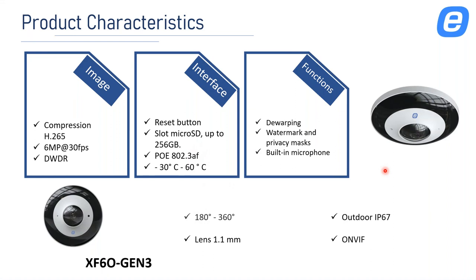The fisheye camera characteristics: H.265 compression, 6 megapixels at 30 frames, digital WDR, reset button, and micro SD slot up to 256 gigabytes. PoE standard 802.3af. Functions include dewarping, watermark, privacy mask, and a built-in microphone, along with basic AI functionalities like motion detection, line crossing, region intrusion, and region entrance and exiting. The lens is 1.1mm and the camera can be used outdoors.